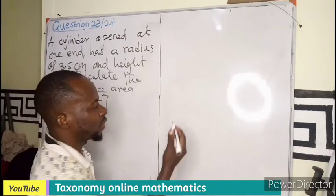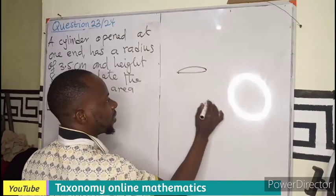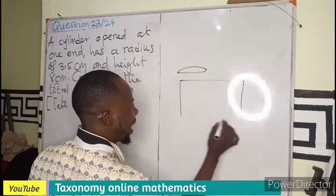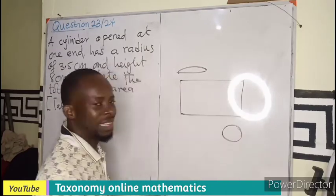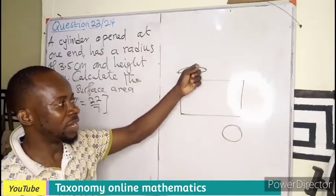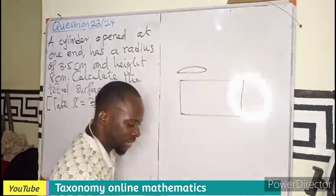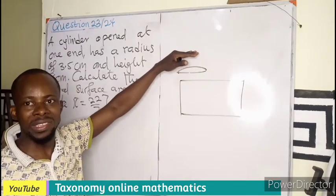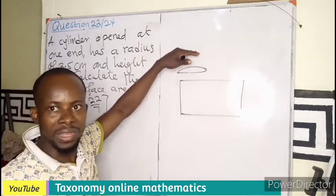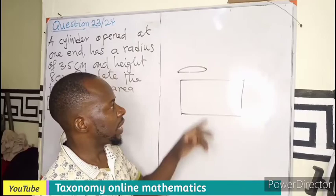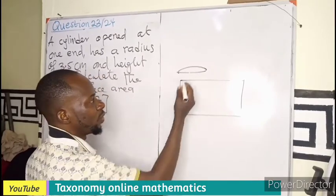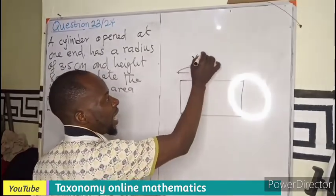If I have a sketch of a cylinder, if I open that at one end, this is a cylinder that has one end open. If I take away one end, meaning it is having only one circle.